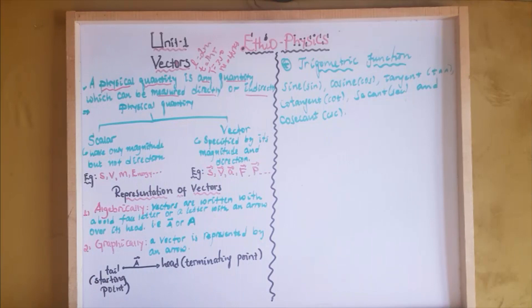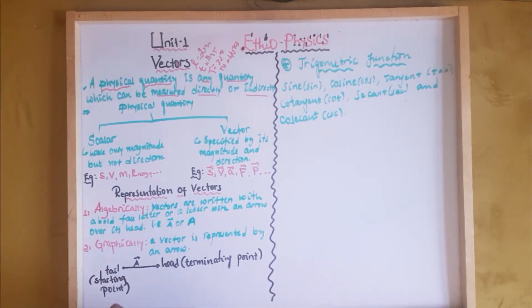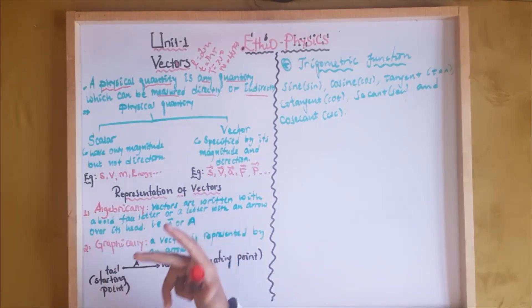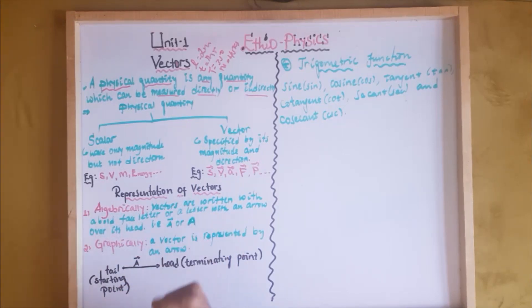Directly measured quantities are known as fundamental quantities. These include length, mass, time, temperature, current, and amount of substance.